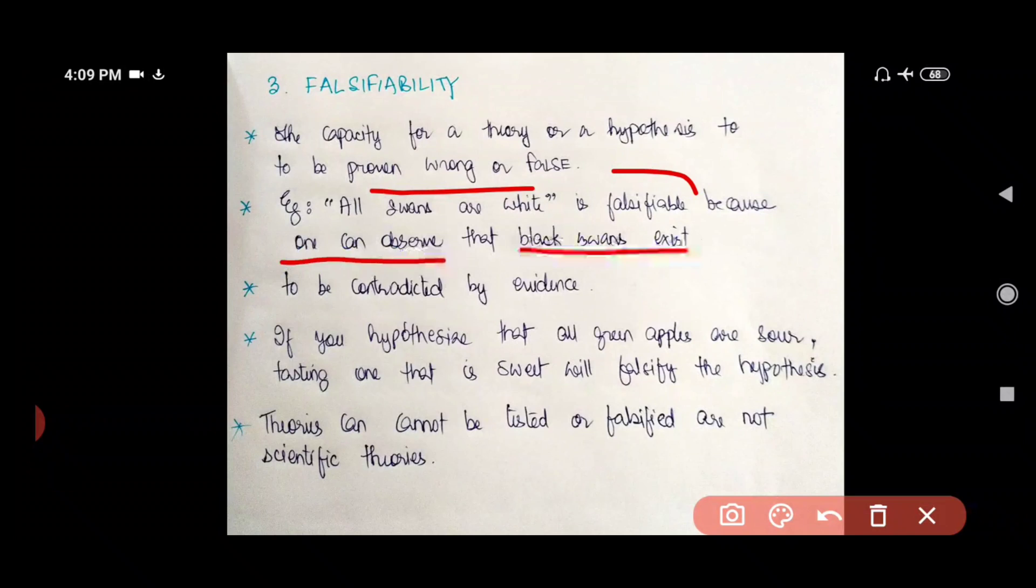And the most important, there is evidence to prove it. So it is to be contradicted by evidence. If you hypothesize that all green apples are sour, tasting one that is sweet will falsify the hypothesis. Do you understand this? It's very easy.